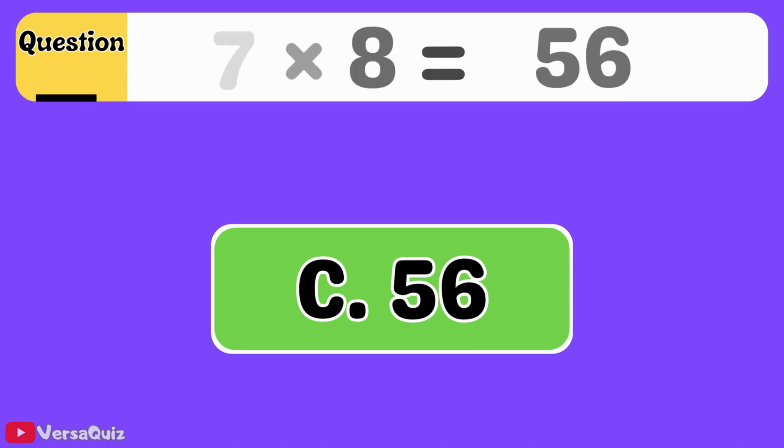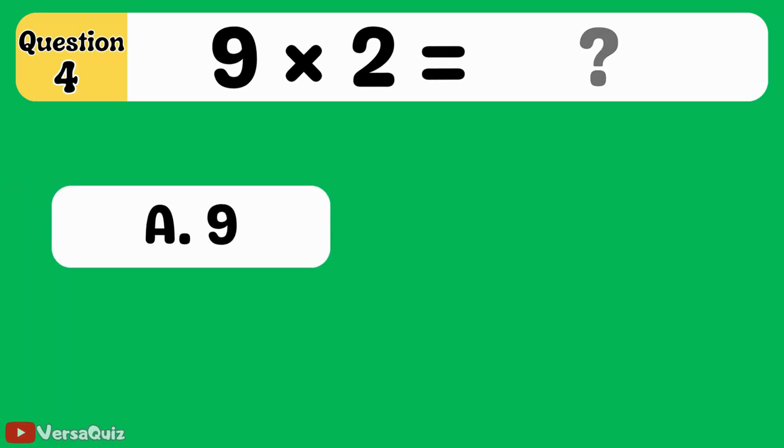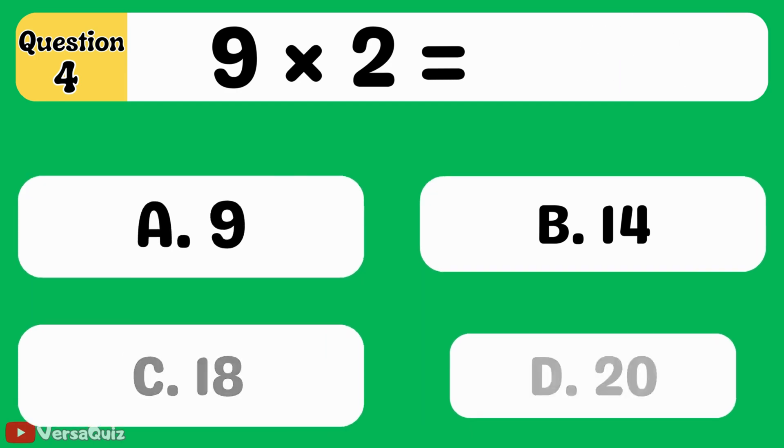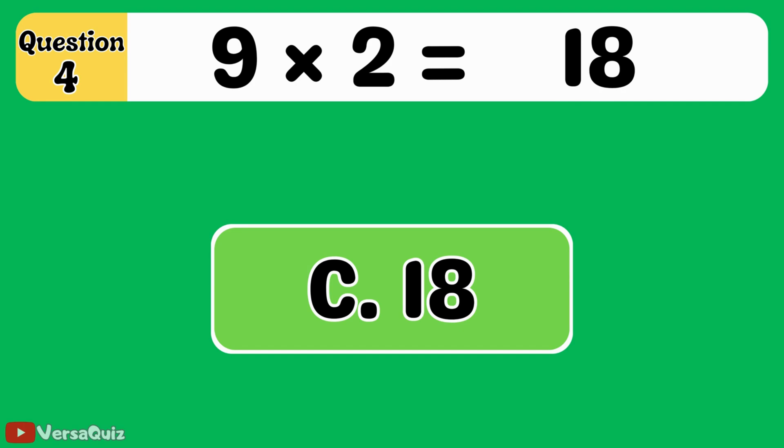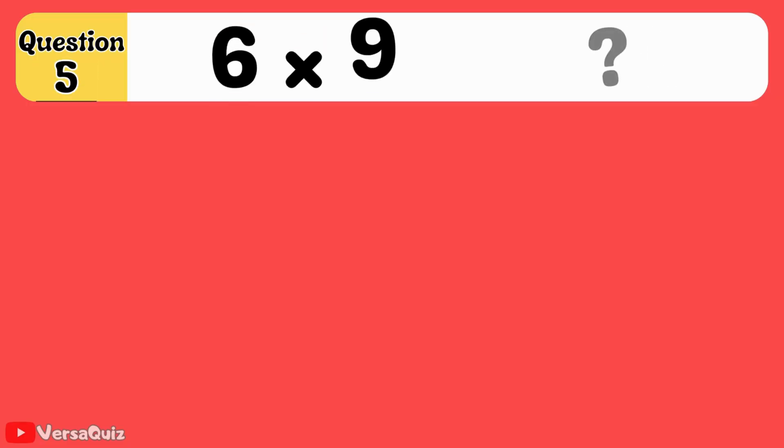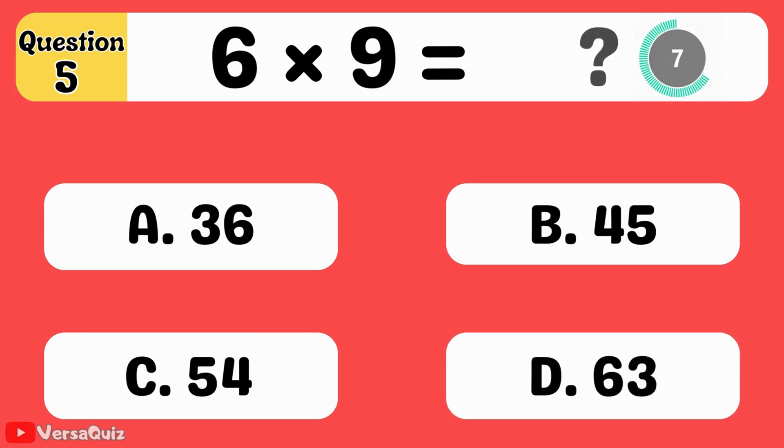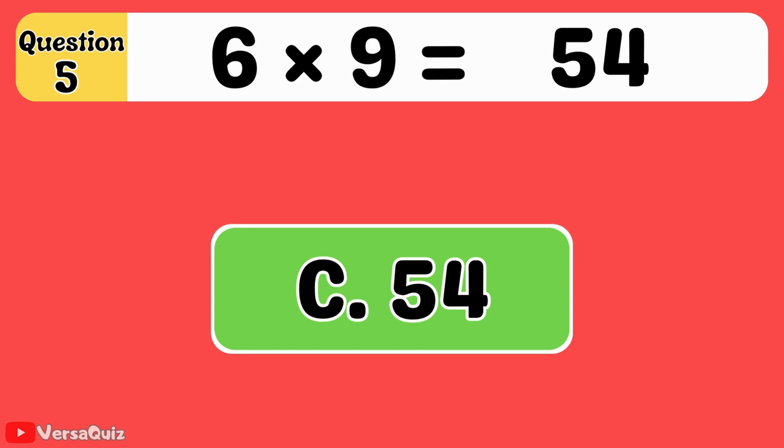Next question. 9 multiplied by 2 is equal to... 18. 9 multiplied by 2 equals 18. Next question. 6 times 9 is equal to... 54. 6 times 9 equals 54.